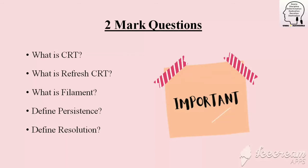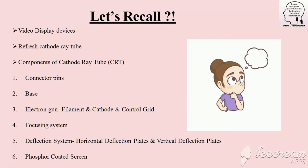Then the resolution is the number of pixels — that is the resolution. This is very important for exam questions. Let's recall: we have video display devices, cathode ray tube components — connector pin, base, filament, cathode, control grid, focusing system, deflection system with horizontal and vertical deflection plates, then the phosphor coated screen. We have a spot and perfect images. The aqua-dag coating acts as a lubricant.